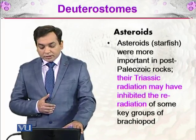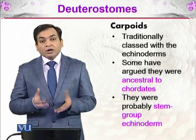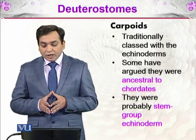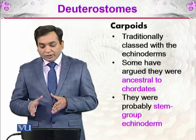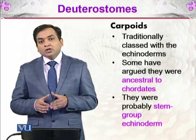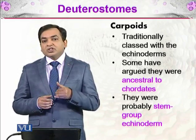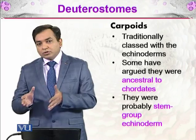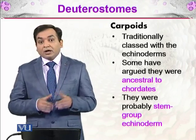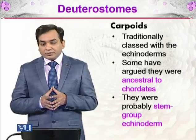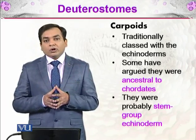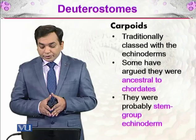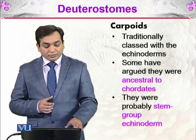The carpoids are traditionally classed with the echinoderms, though some have argued they were ancestral to the chordates — organisms which include vertebrates and which have notochord formation in their embryos. The carpoids were probably stem group echinoderms.